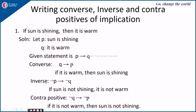The inverse of P implies Q is negation of P implies negation of Q. Since P is 'sun is shining,' negation of P gives us 'sun is not shining,' so the inverse is: 'If sun is not shining, then it is not warm.' The contrapositive is negation of Q implies negation of P, which is: 'If it is not warm, then sun is not shining.'